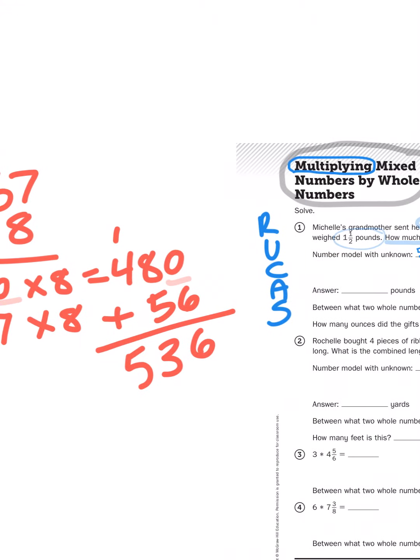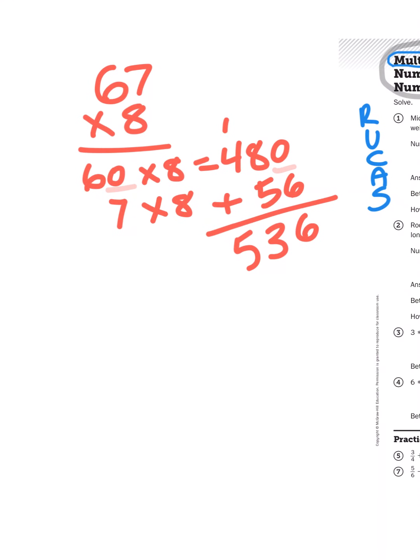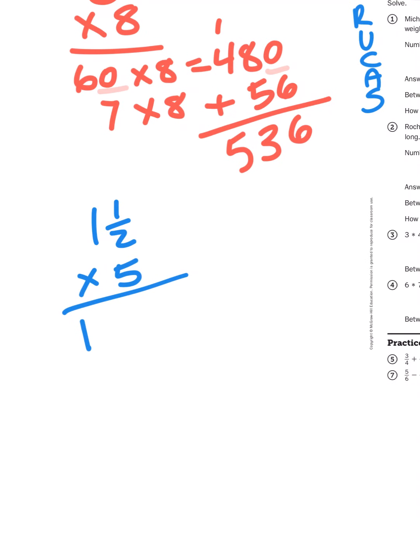Now, let's look at this problem again, 67 times eight. I'm going to approach my problem for number one in the same way. I'm going to multiply one and a half times five. And what will that look like? Well, I'm going to break down one and a half into two parts. One and a half. And I'm going to multiply each part by five.